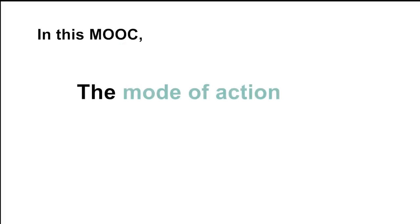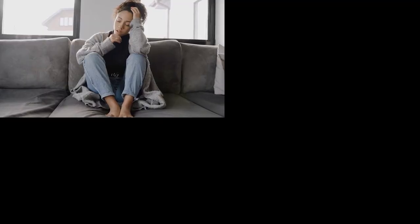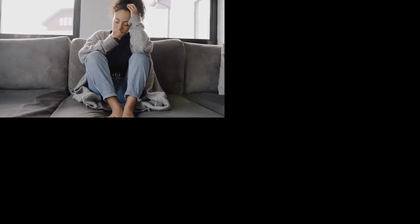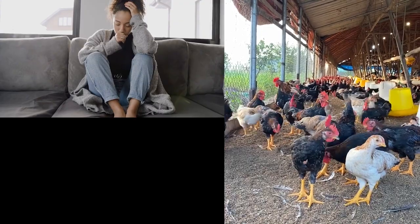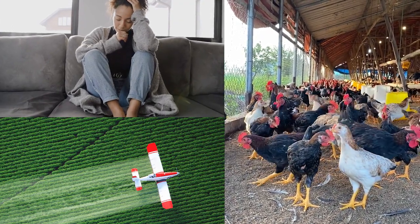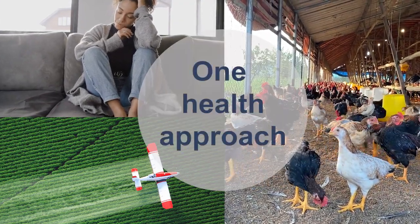In this MOOC, you will learn about the mode of action of antibacterial agents, their origin and their impact on human and animal health. You will be made aware of the current epidemiology of bacterial resistance in humans and in livestock in France and Europe in a One Health approach.